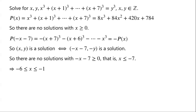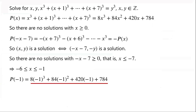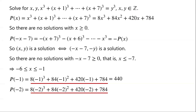When x = −1: p(−1) = 8(−1)³ + 84(−1)² + 420(−1) + 784 = 440, which is not a perfect cube, so no integer solution. When x = −2: p(−2) = 8(−2)³ + 84(−2)² + 420(−2) + 784 = 216 = 6³. So (x, y) = (−2, 6) is a solution.